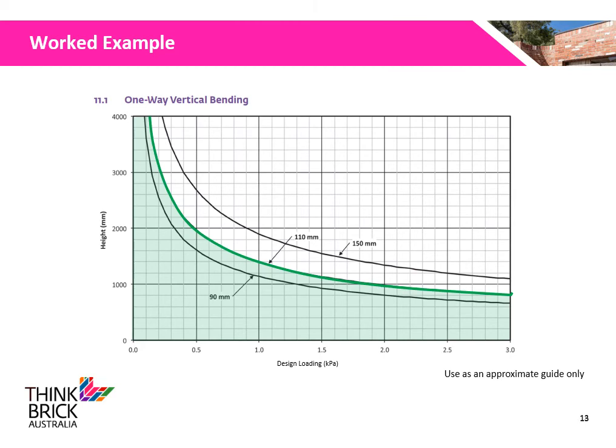Here is a design chart from the TBA-04 manual, which can be found on the ThinkBrick website. To read this graph, anything below the chosen curve is deemed acceptable. A 2.7 m high wall using standard 110 mm thick bricks is not acceptable given a design loading of 0.5 kPa, and thus requires redesigning.